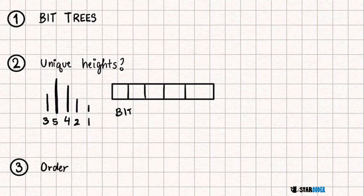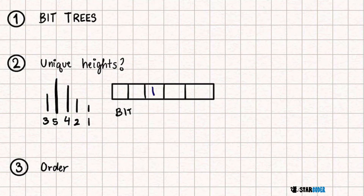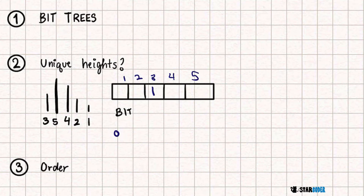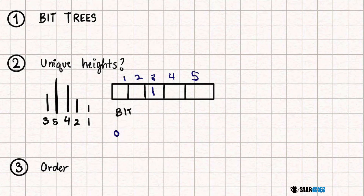In that case, we are going to use a BIT tree to find our answer. As we read it in and dynamically update, we have a 3 here, so that is going to be 1. The answer value is going to be 0, since there is no hair with a greater height so far. Then we have 5, and we update 1 here — this is also going to be 0, since there is nothing greater than it.